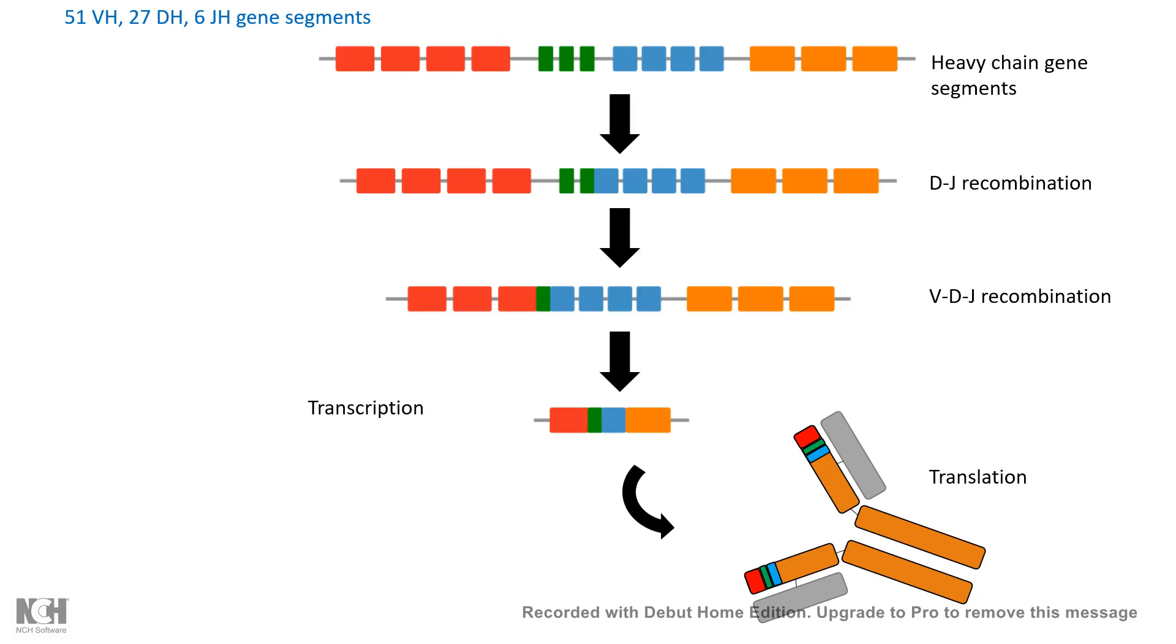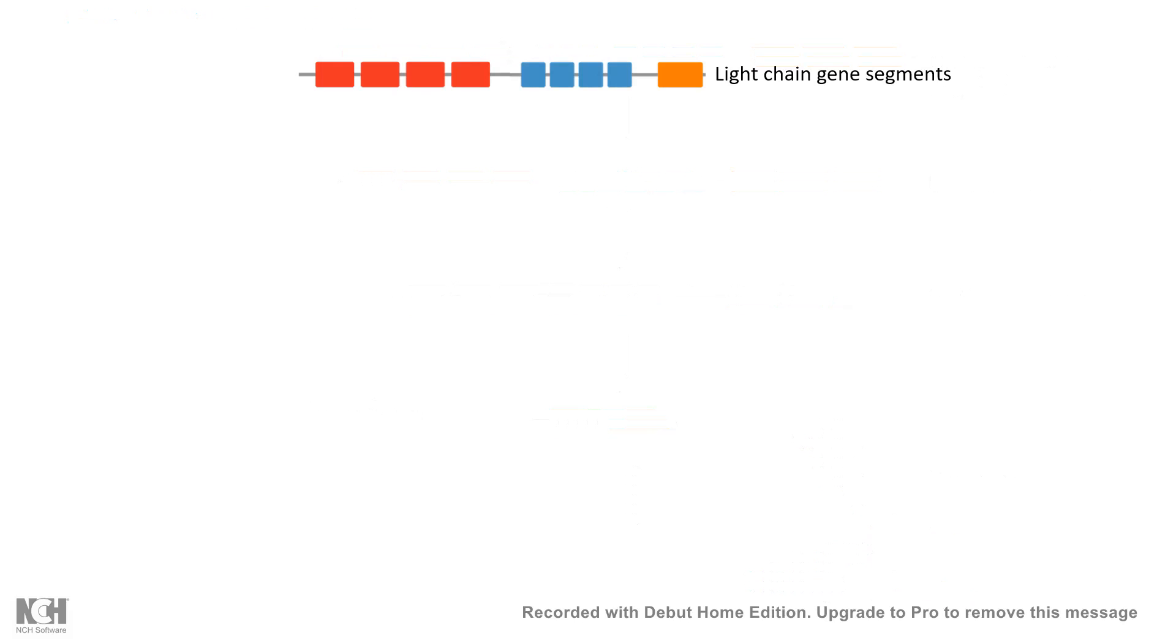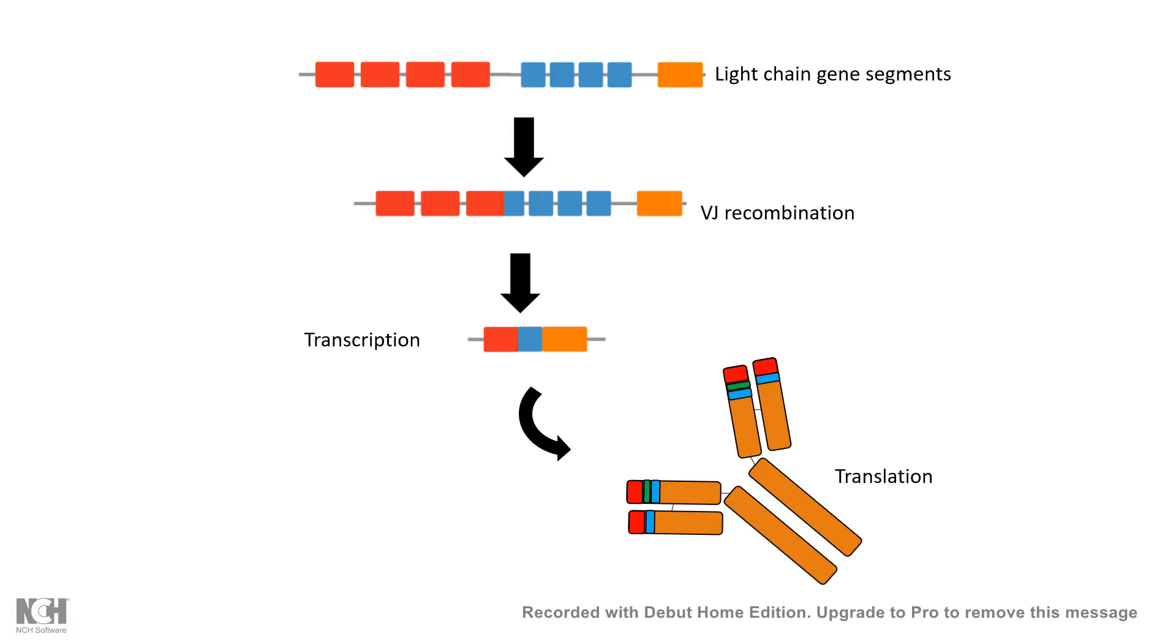Now let's talk about the light chain. The light chain doesn't have the D segment, but it has V and J segments which can recombine by VJ recombination to give rise to a specific transcript that forms specific light chain segments.